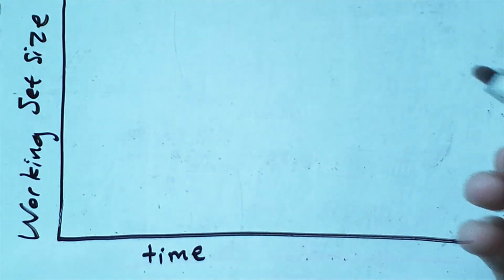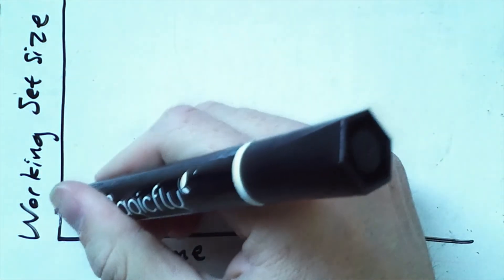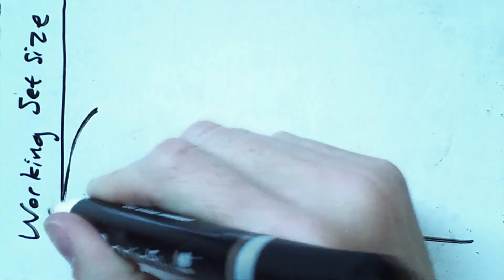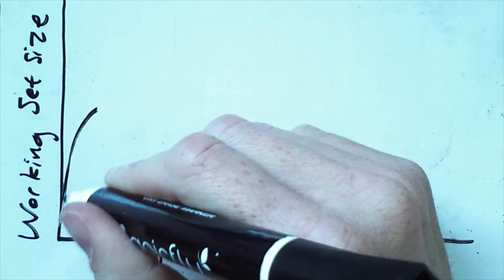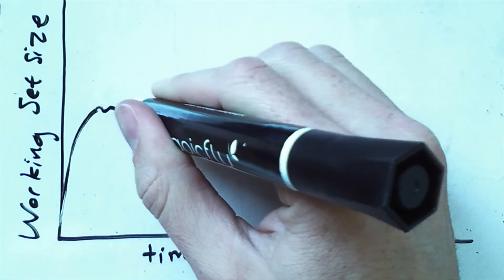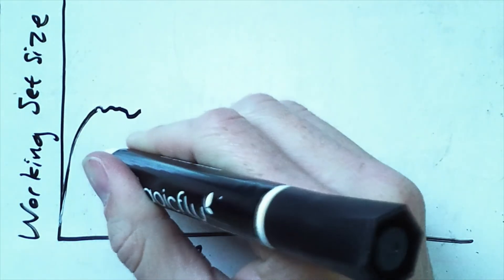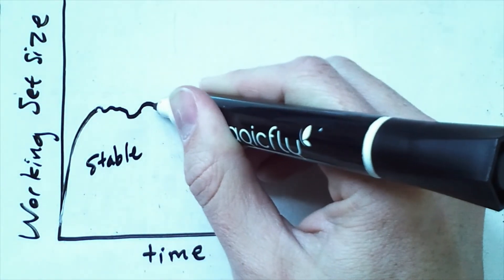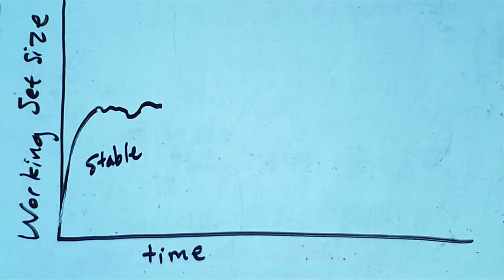We have more of these dots, meaning that the working set changes less often. And we also have some cases where the size of the working set is actually smaller than delta, which rarely happens for small values of delta. Now if we wanted to manage the pages for a process based on the working set.